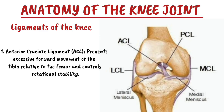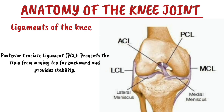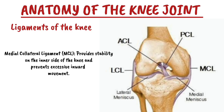Number two is the posterior cruciate ligament, which is the PCL. It prevents the tibia from moving backward and provides stability.